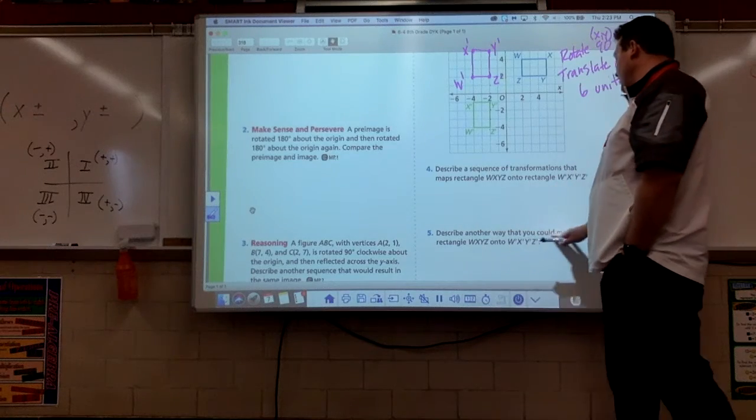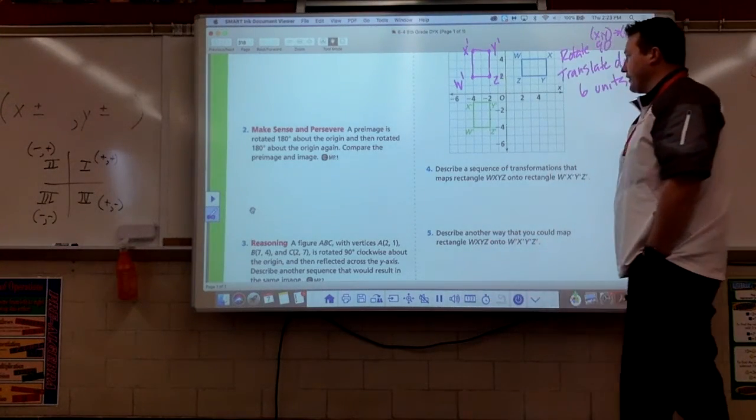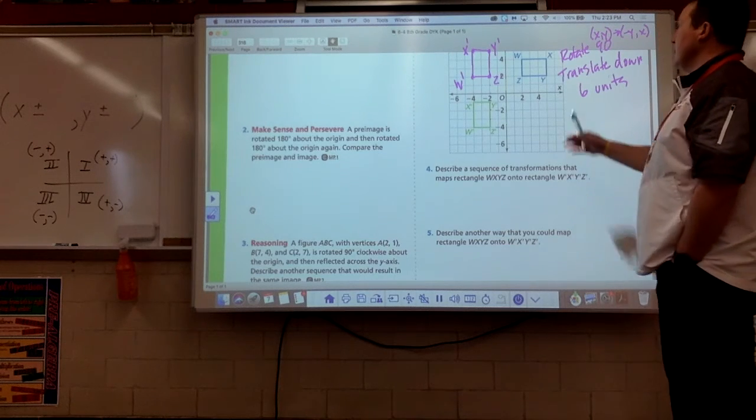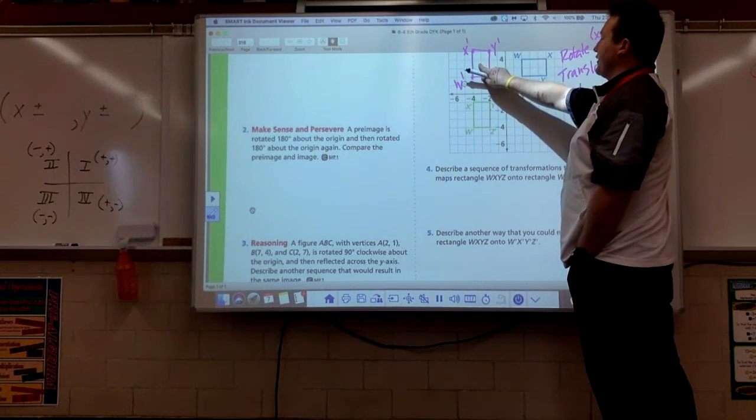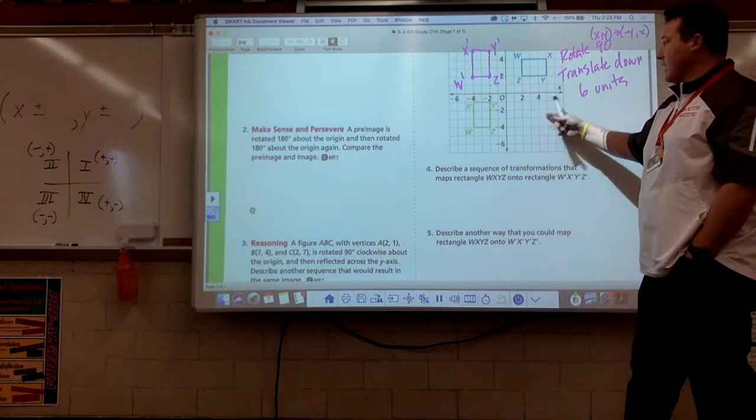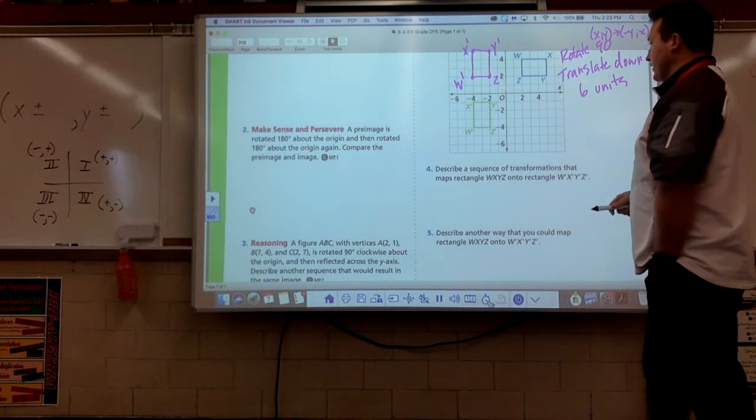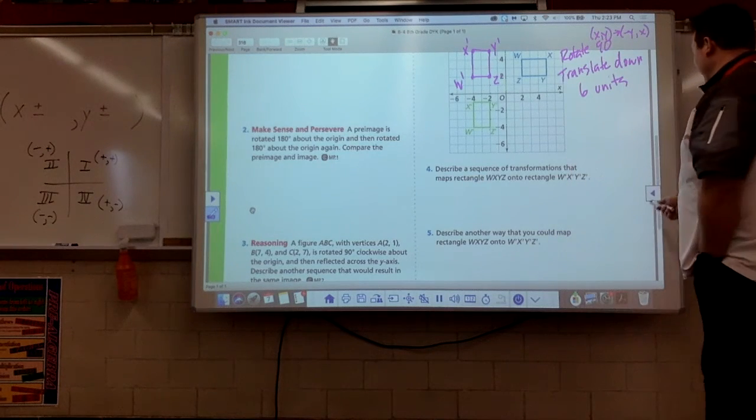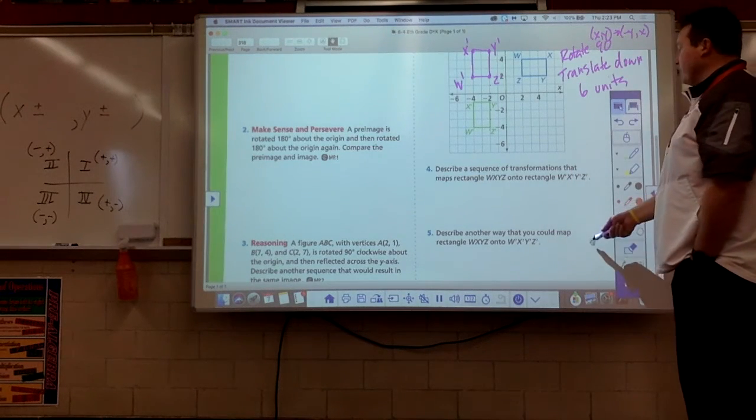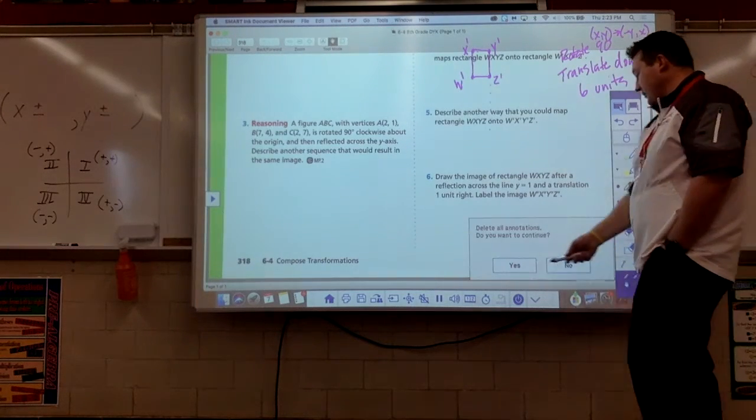This one says describe another way you could map the rectangle onto there. Well, instead of rotating it here, could I rotate it all the way down here into quadrant 4 and then slide it over to the left? You better believe we could. So that would be another one. Again, we're not going to go through that one because we've already figured out one for it.